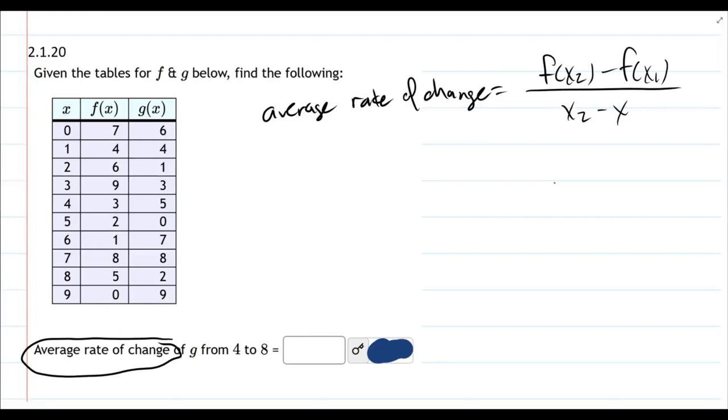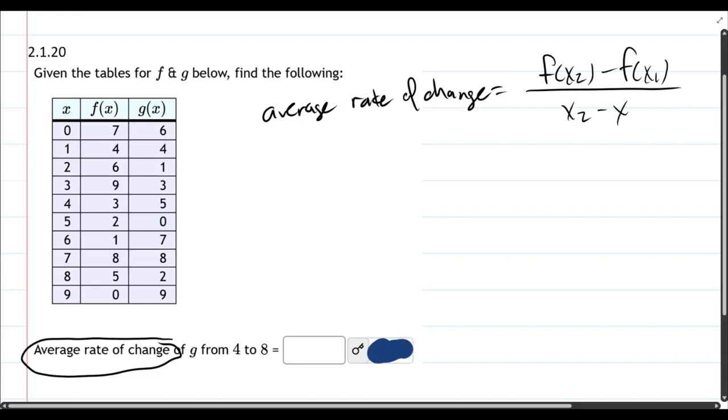What mistake did I already make? I assumed it was average rate of change of f, but it's g in this problem, so let's go ahead and put the right function in here.